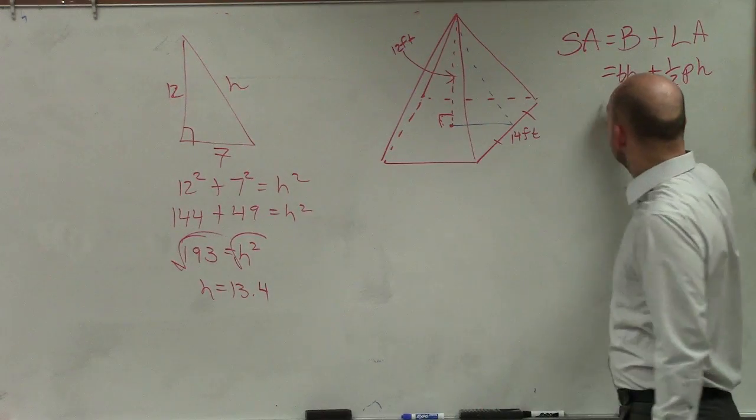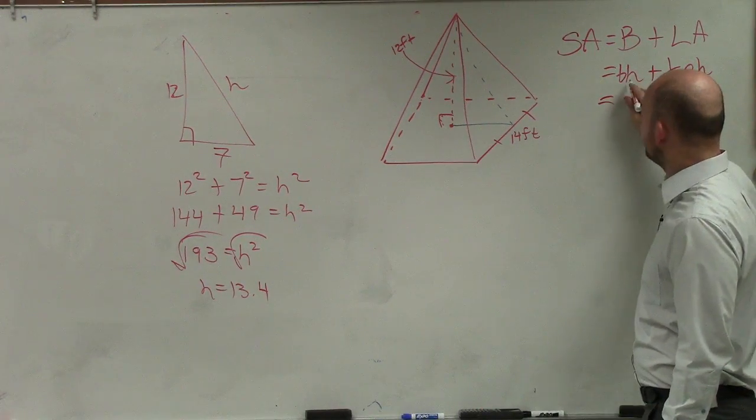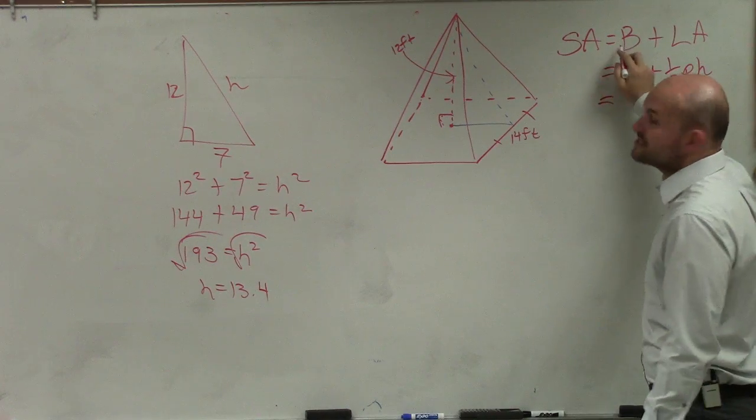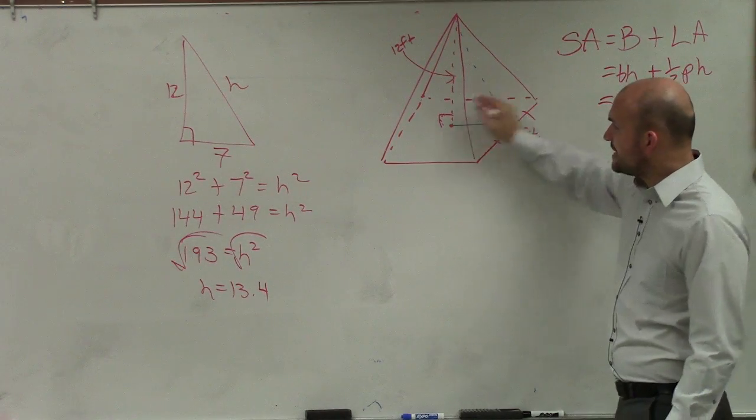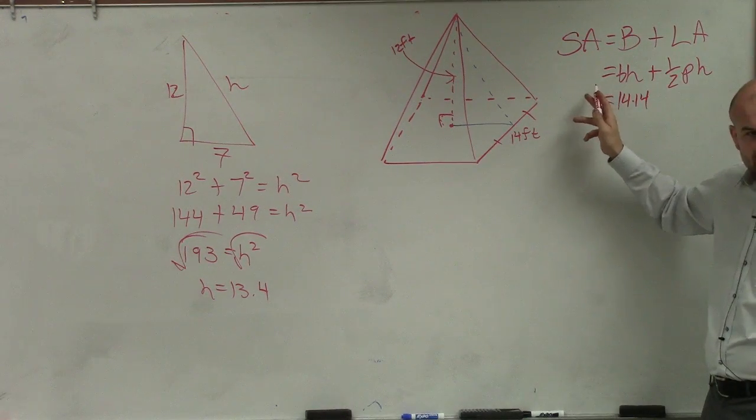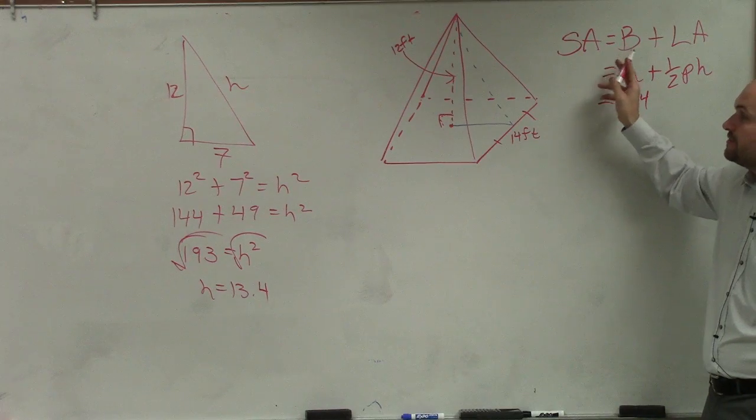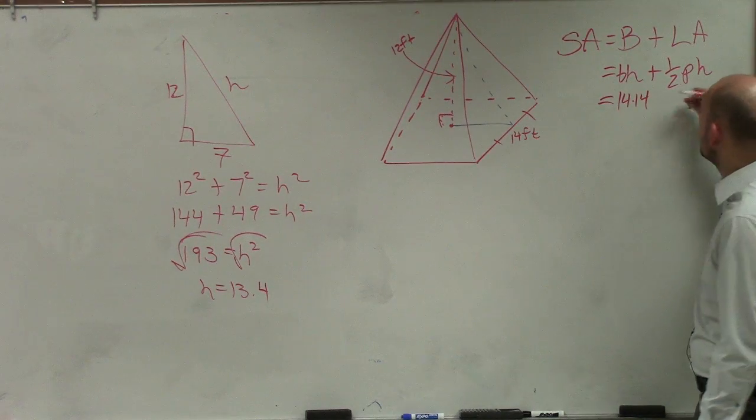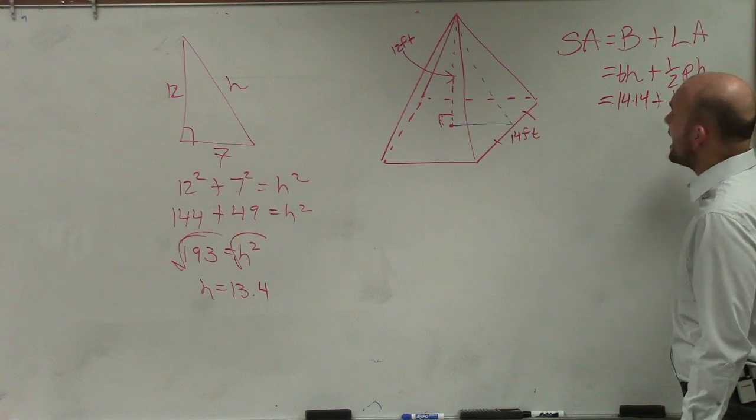So now, let's go and figure out the rest of my information. Base times height, that is for the base. So that's a square. So that's going to be 14 times 14. Notice it's smaller b and h. That's to find the area of the base, which is a square. So it's 14 times 14 plus 1/2.